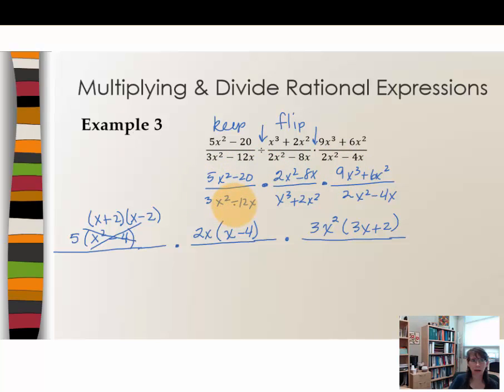Every numerator has been factored. Now let's go through the process in the denominator. 3x² - 12x, 3 and 12 have 3 in common and they also have x in common. So I would have x - 4 in the quantity remaining. In our second rational expression, there's not going to be a common coefficient but they both do have at least x². That would leave x + 2 in the quantity. Finally our last denominator, 2x² - 4x, looks like they have at least 2x in common. And that would leave x - 2 in the quantity.